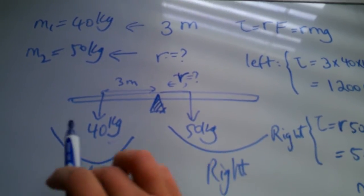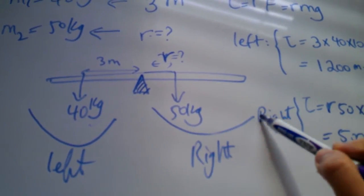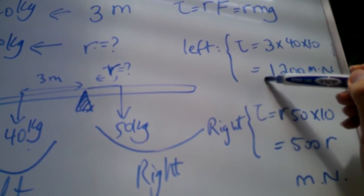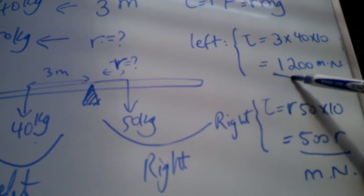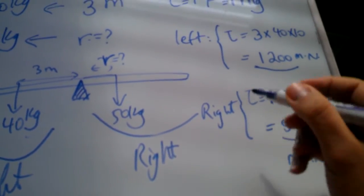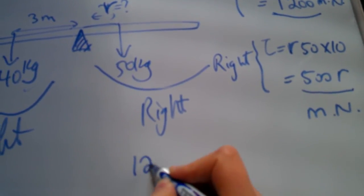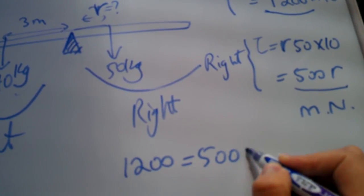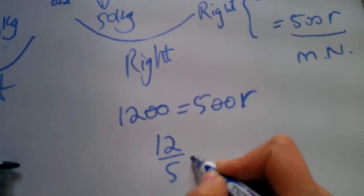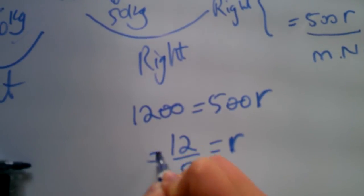Now in order for the whole system to be balanced, torque for the left has to be equal to torque from the right hand side. Essentially this 500r has to be equal to 1200 meter-newtons. So we are equating left torque to the right torque. It's essentially 1200 equals 500r, and that gives us 12 over 5.